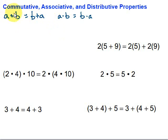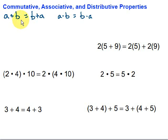If we look at that word 'commutative,' the root is 'commute.' To commute is to move — people commute to work. So, the numbers, or in this case variables, are moving. We can do that for addition and multiplication. That's the commutative property.